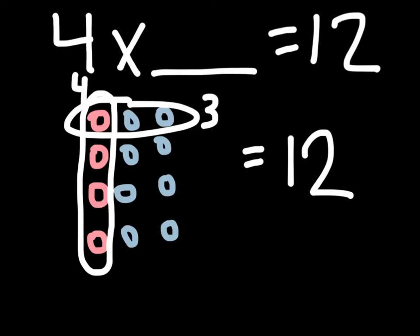I can also solve this by drawing an array. 4 groups of means I draw 4 rows. Notice how I drew those 4 circles in red. Now I need to draw the circles going horizontally until I get to 12 total circles, since 12 is my product. Keep in mind, I count that red circle as part of my columns going horizontal. Notice how I circled them, so then I made sure that they were accounted for. And then I noticed that 4 times 3 equals 12.